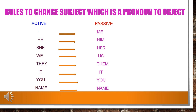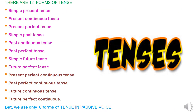There are 12 forms of tense, but only 8 forms of tense we are going to use in passive voice: simple present tense, present continuous tense, present perfect tense, simple past tense, past continuous tense, past perfect tense, simple future tense, and future perfect tense. We cannot make passive voice in present perfect continuous, past perfect continuous, future continuous, and future perfect continuous tenses.